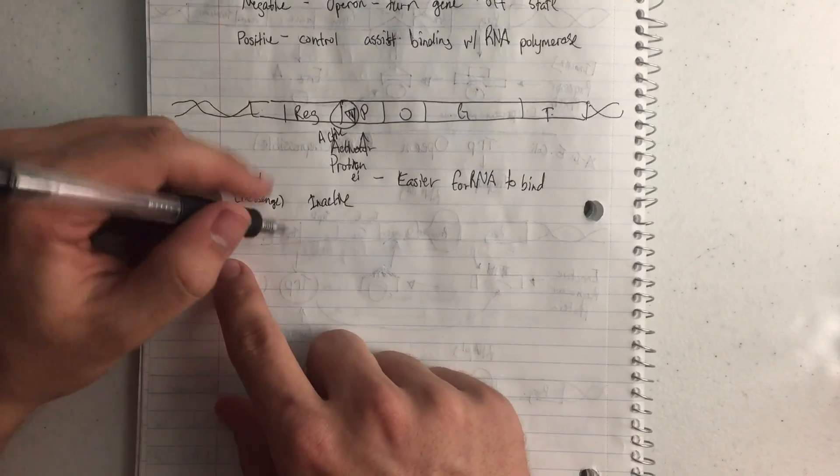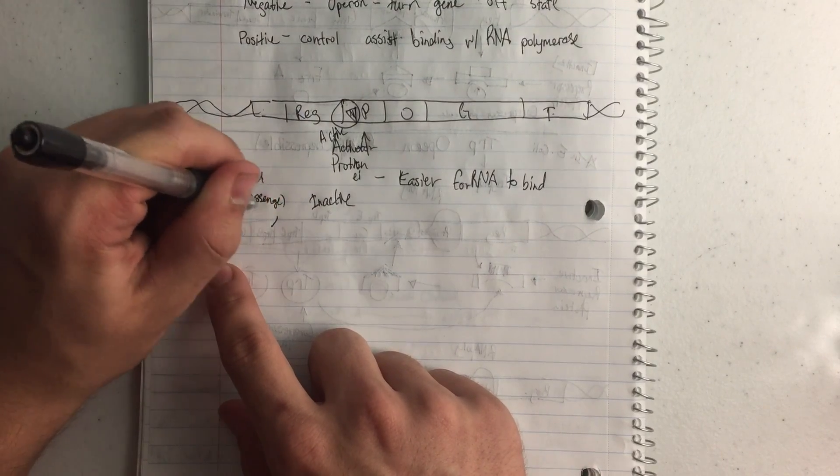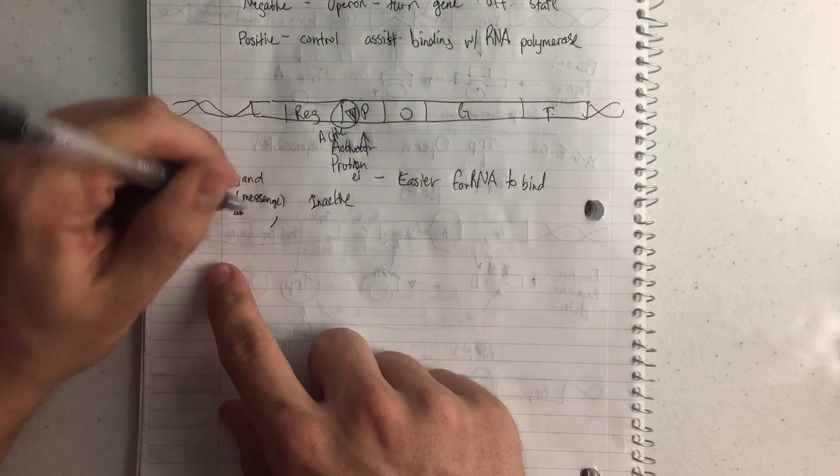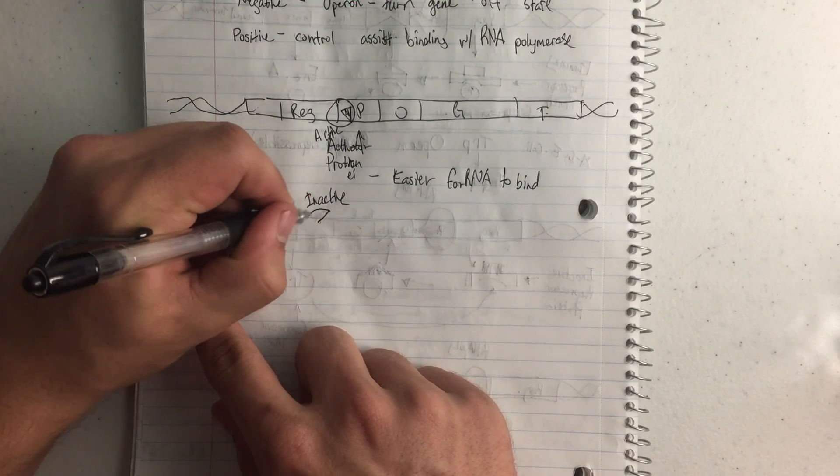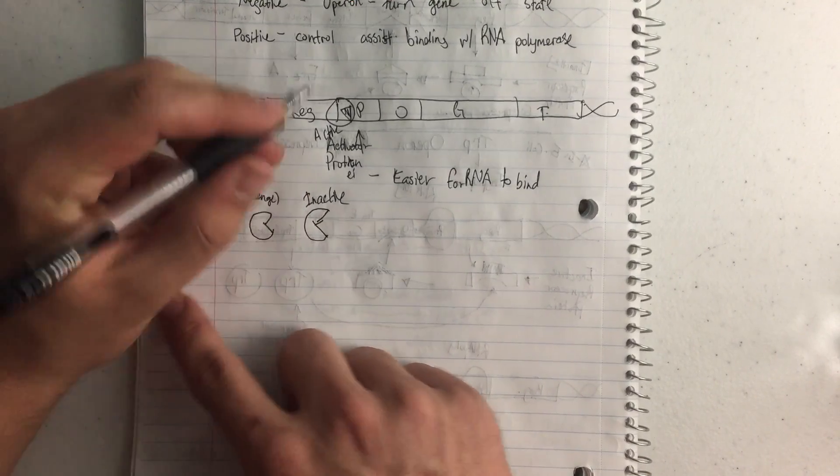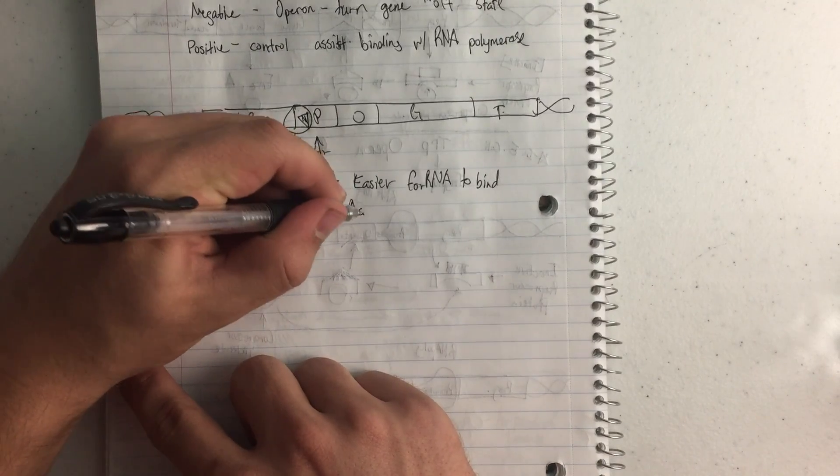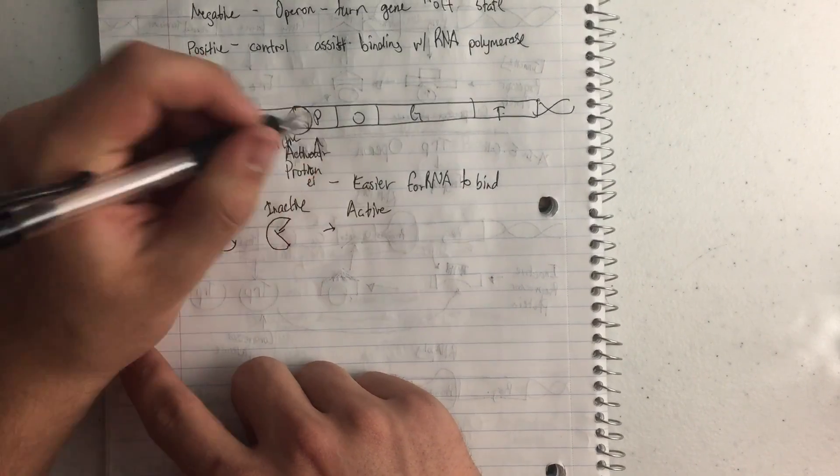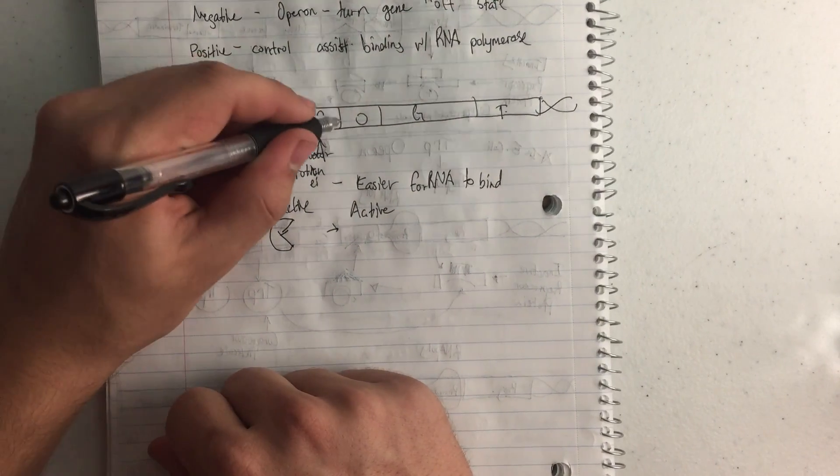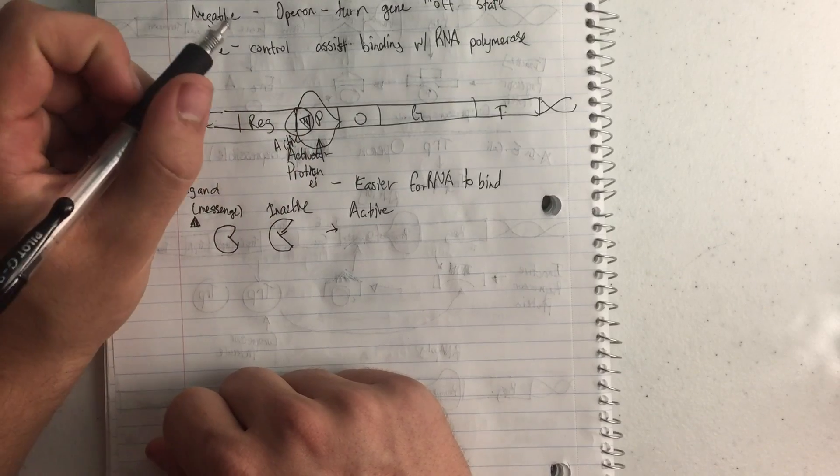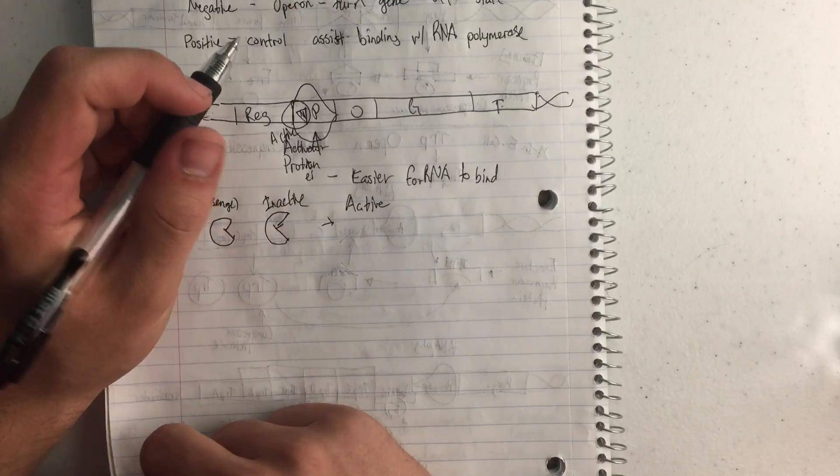And so the ligand comes and binds to the inactive one. So if ligand is a little triangle and we have a little Pac-Man, when Pac-Man gets fed and turns into an active activator protein, then it'll be able to bond to the promoter region. And that's just going to make it easier for RNA polymerase. So the more ligands there are, the better. That's basically how that works.